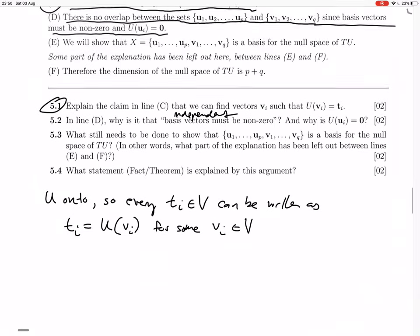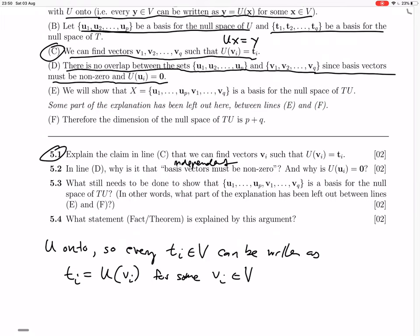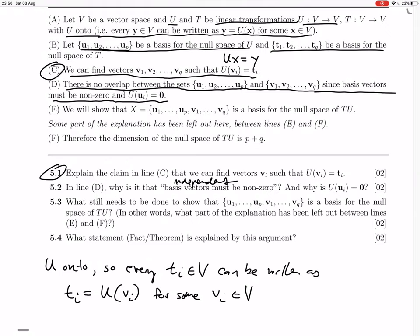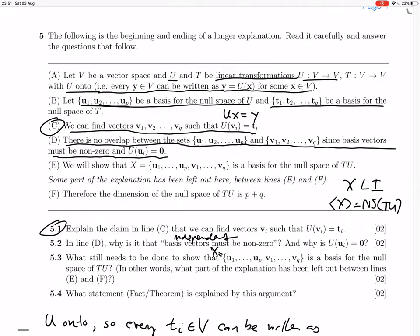Okay. We've got 5.3 now. What still needs to be done to show that u1 to up, v1 to vq, is a basis for the null space of TU? In other words, what part of the explanation is being left out between line E and F? Okay. We will show that X equals u1 to... Show that X equals that. We will show that X is a basis for the null space of TU. Something left out. Okay. Well, to show it's a basis, you're going to have to show that it's... You're going to have to show that X is LI and linearly independent, and that it spans the null space of TU. So, that's going to have to be shown. Has that been shown already, maybe? Um, we haven't even... No, this set has not even been mentioned before. We've just constructed this set. So, those are the two things that need to be shown.